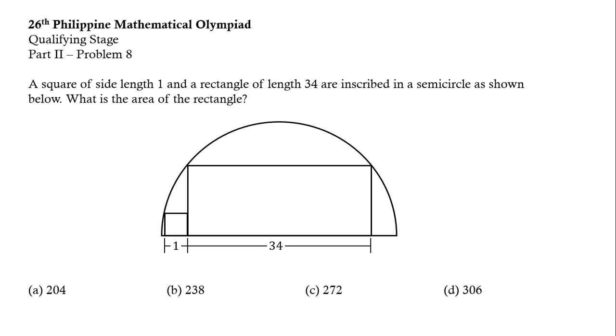To get started, let us connect the center of the semicircle to the top left corner of the square to form a radius. Let us denote this radius by R. Notice that we have here a right triangle with a height of 1 unit since the side length of the square is 1 unit.